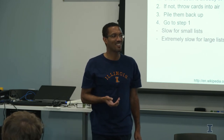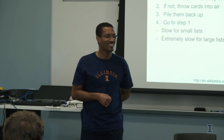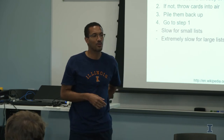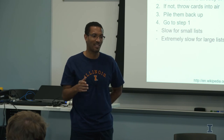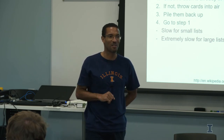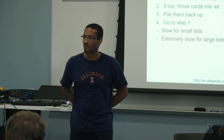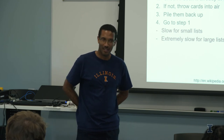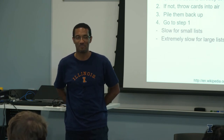Why do computer scientists study bogosort if it's really bad? It can help understand probabilistic things — the odds of picking something at random correctly, like picking first, second, and third place in horse racing. It can also serve as a comparison baseline: you can say this method is 10 times better than chance, or state the worst possible case. Essentially you're comparing chance versus method.